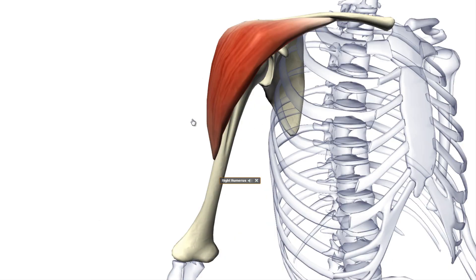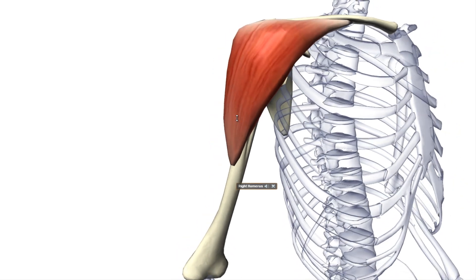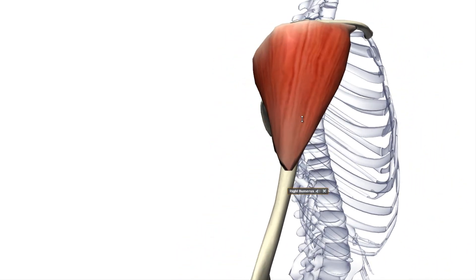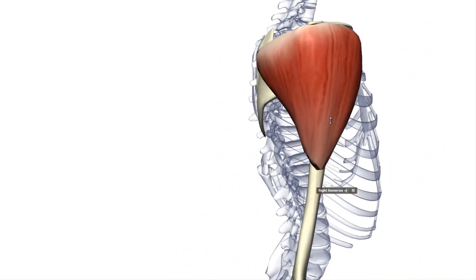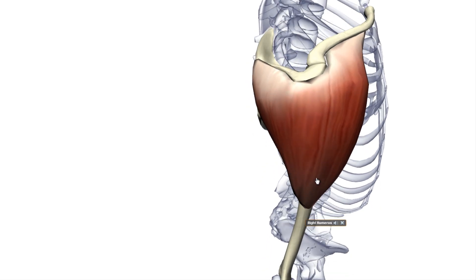It serves for the abduction of the shoulder, and flexion and extension dependable upon which part of this muscle is activated, since it originates anteriorly and posteriorly from the humerus.